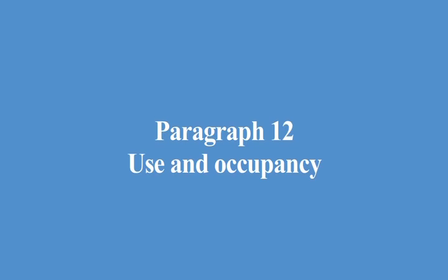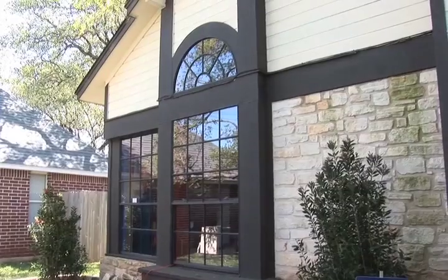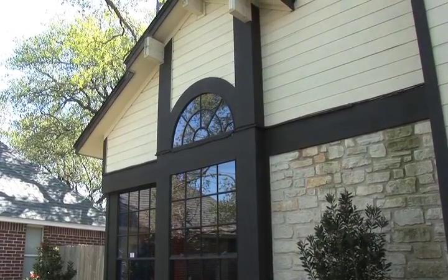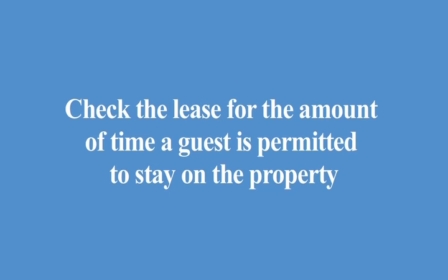Paragraph 12, Use and Occupancy. This paragraph covers the permitted use of the property and the persons permitted to reside on the property. The tenant may use the property only as a private residence — all other uses are prohibited. The tenant must disclose the names and ages of all occupants that will be permitted to reside on the property during the term of the lease. This paragraph also requires the tenant to promptly notify the landlord of any changes in their contact information. If there is a homeowner's association, the tenant should become familiar with the association rules because the tenant will be subject to those rules. If the tenant has guests, check the lease for the amount of time a guest is permitted to stay on the property. Finally, the paragraph provides a list of activities that are prohibited — be sure to read through those and refrain from engaging in those activities.